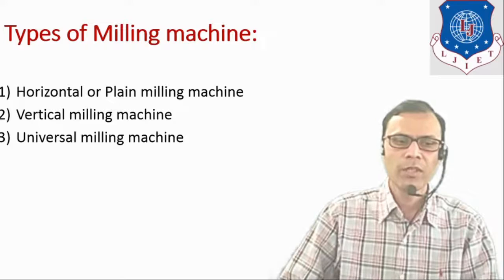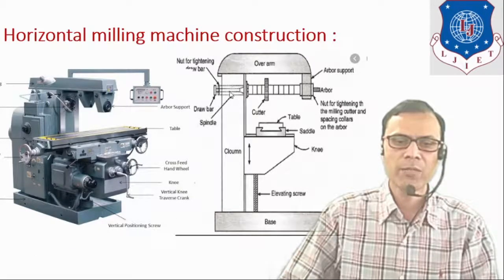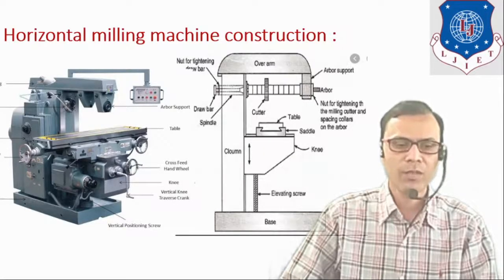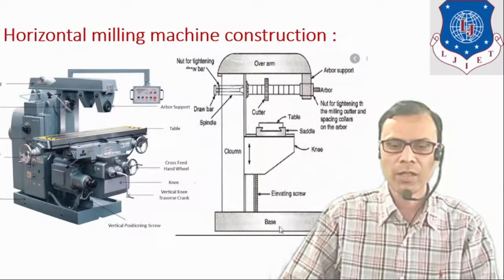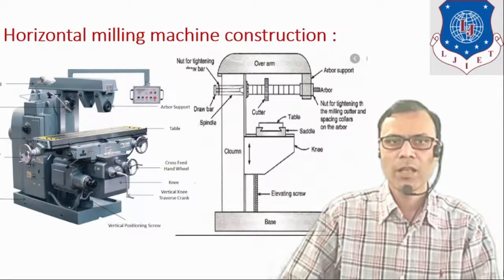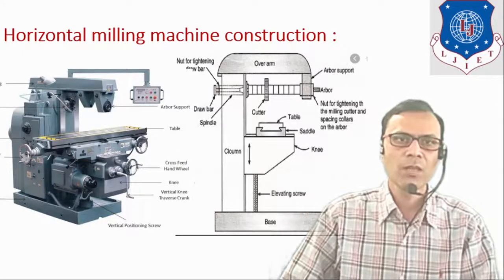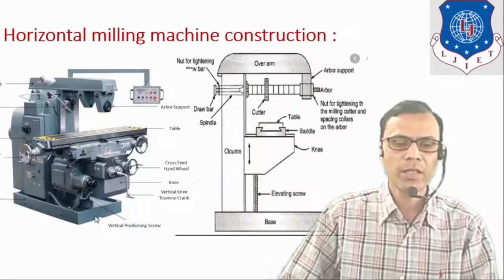Let us start with the horizontal or plain milling machine. Here a photographic view and its block diagram both are shown. The first part is the base of the machine. The main function of the base is to support all other parts of the machine, and in some machines it also serves the purpose of a reservoir for the coolant.